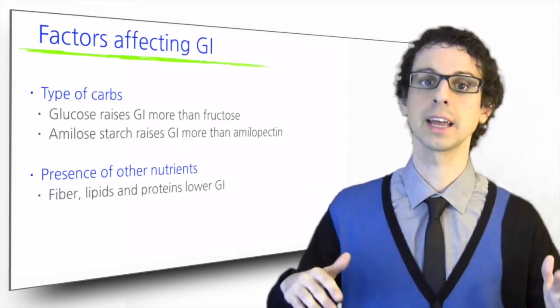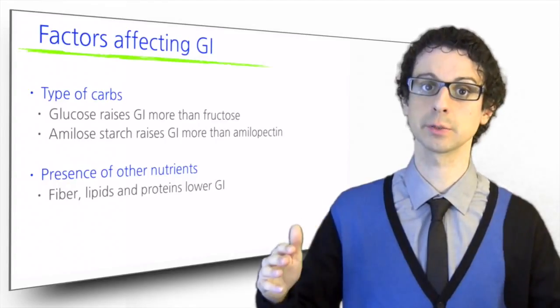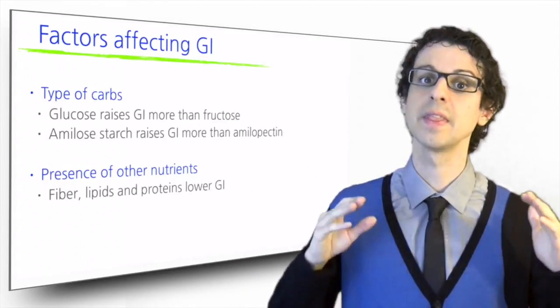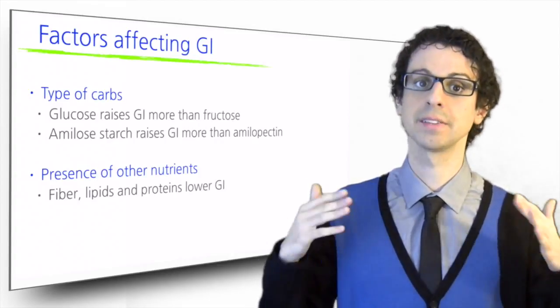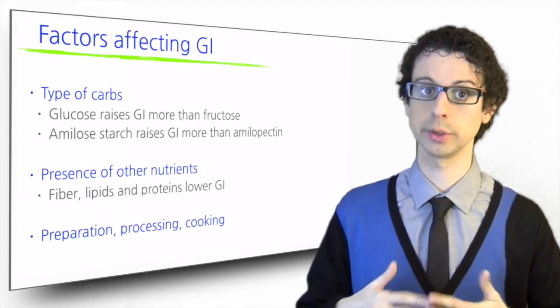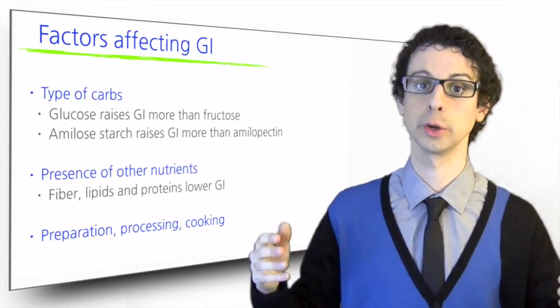It is easy to understand why whole grains and their derivative products have lower glycemic indexes than their refined counterparts. But many other factors affect the glycemic index of a food, including preparation, processing, and cooking.